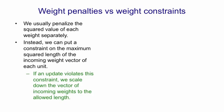When we update the weights, if the length of that incoming vector gets longer than allowed by the constraint, we simply scale the vector down by dividing all the weights by the same amount until its length fits the allowed length.